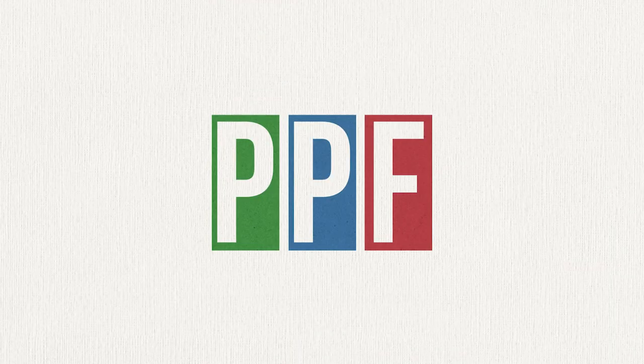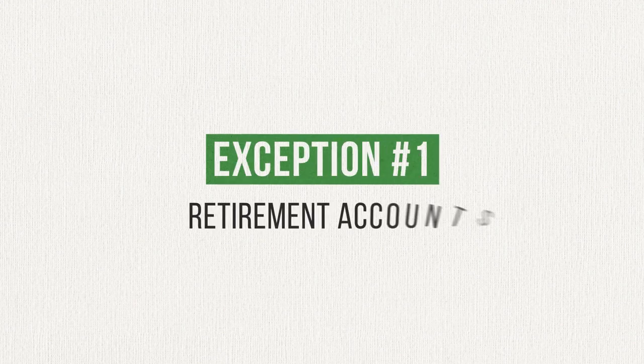Before I wrap this one up, I want to talk about three exceptions to capital gains tax that you should absolutely be aware of. These are the kinds of tax planning strategies that wealthy Americans take advantage of every single day, and you should too. Number one is retirement accounts — I'm talking about everything from your 401k, to your traditional IRA, to your Roth IRA. Before tax, after tax, it doesn't matter. Money inside of your retirement accounts is not subject to capital gains tax. Period. You can buy and sell investments with money inside of those accounts, and regardless of how much those investments earn, you'll never pay a penny of capital gains tax.